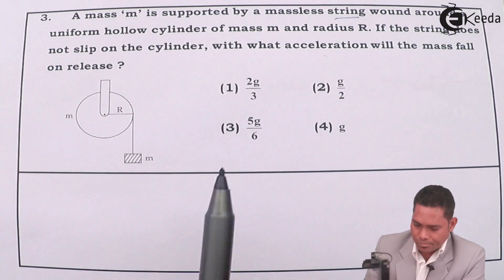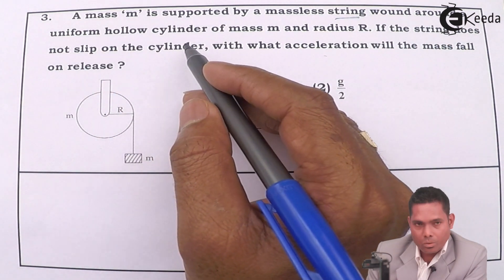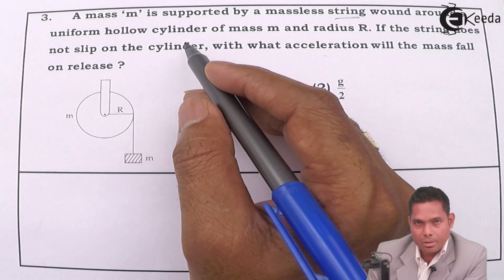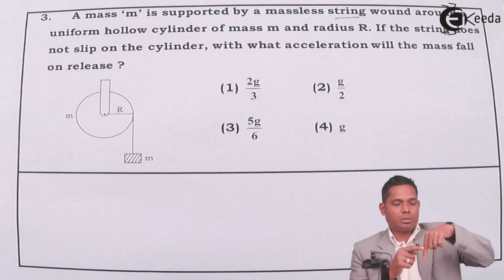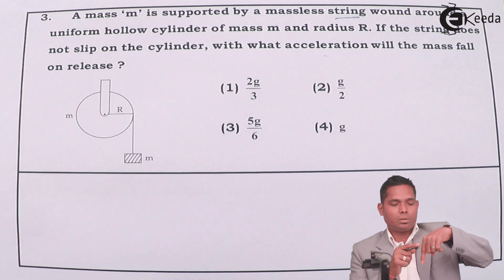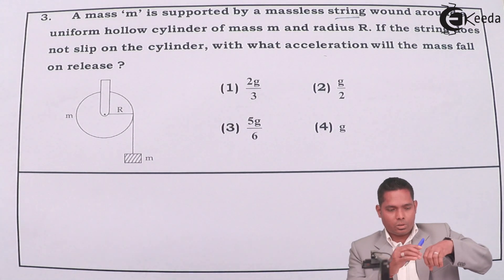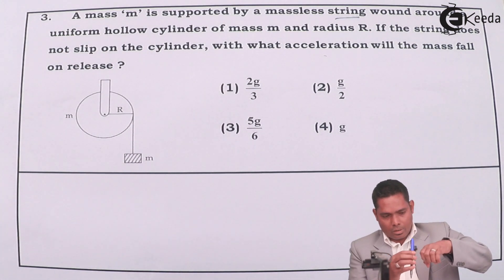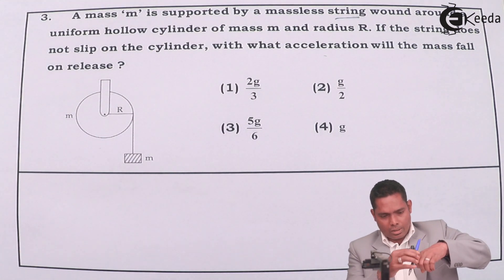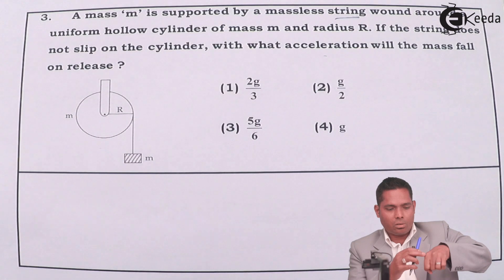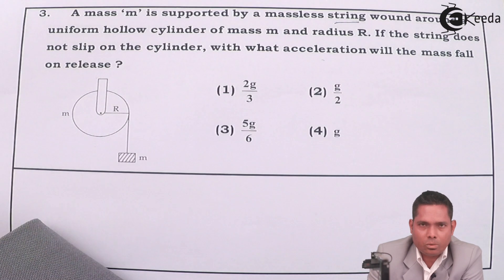If the string doesn't slip on the cylinder, that means there is no relative motion between the string and the cylinder. Because as the block goes down, the cylinder rotates. The acceleration of the string and the acceleration of the cylinder will be the same, because there is no slipping.